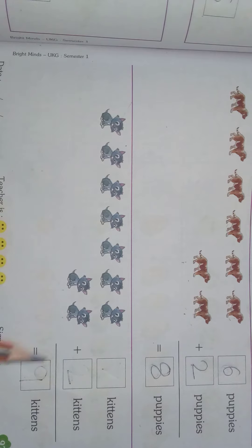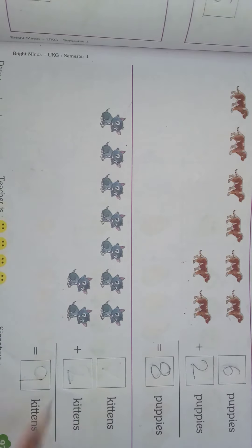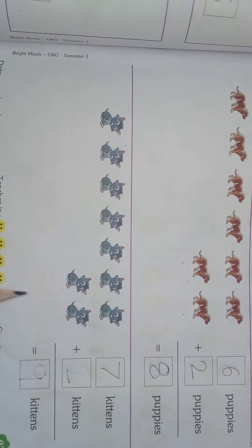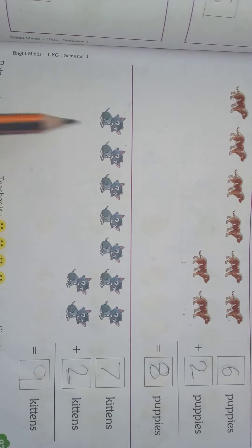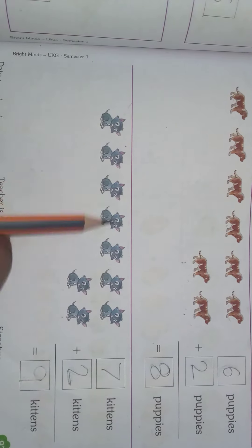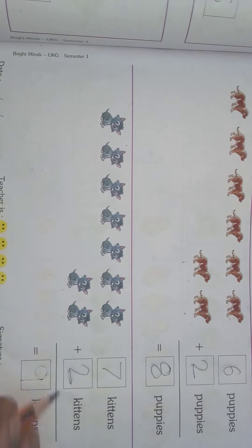Next we will count how many kittens. 1, 2, 3, 4, 5, 6, 7 - seven kittens, plus 1, 2 - two kittens. Now counting all: 1, 2, 3, 4, 5, 6, 7, 8, 9.